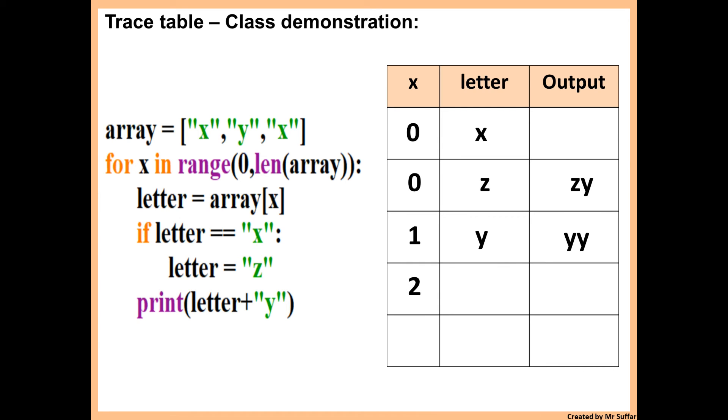Then it will increment to two. So now that we incremented to two, we go to the top of the loop. Letter is equal to array x, array two. So index two is x.